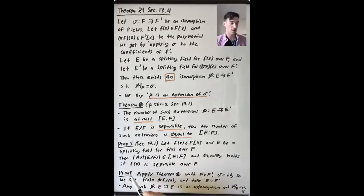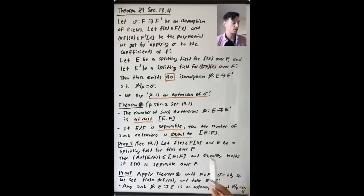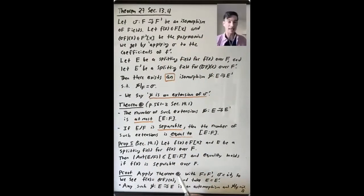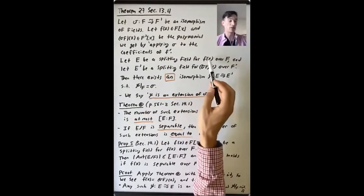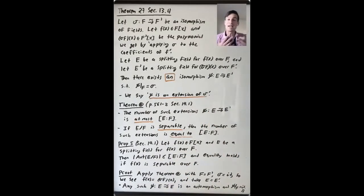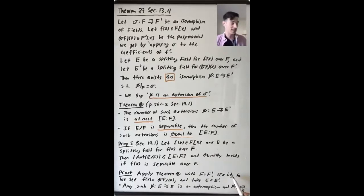From this result we can directly prove Proposition 5 in Section 14.1: if f(x) is a polynomial in F[x] and E is a splitting field for f(x) over F, then |Aut(E/F)| is at most [E:F], with equality if f(x) is separable over F. We prove this by applying Theorem Star in the special case where F equals F' and σ is the identity, and then also E equals E'.